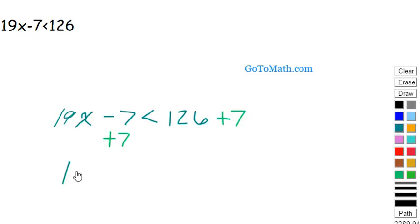So now we're left with 19x is less than 133. I don't know, what is it, 133? Is that right? Can't add all of a sudden. See, take 4 away from that, give it to that. That's 133, yeah, okay.